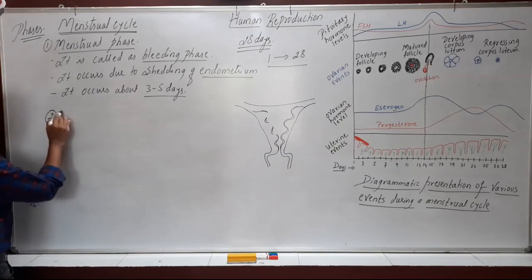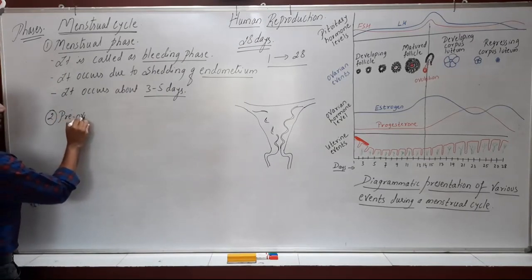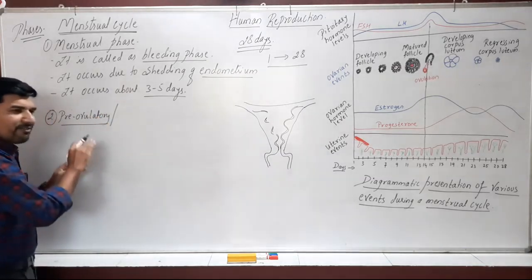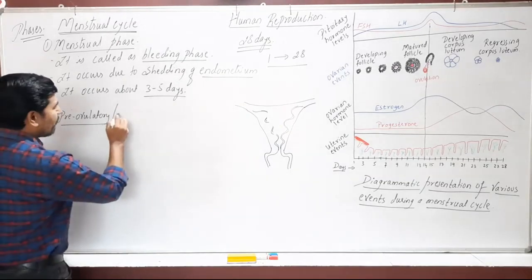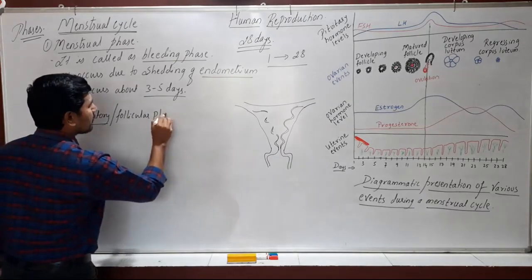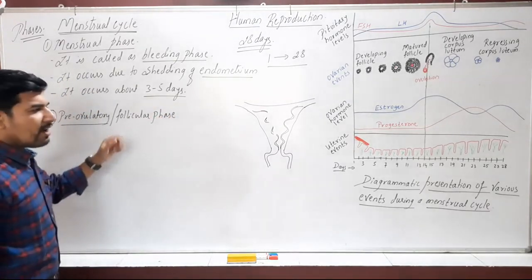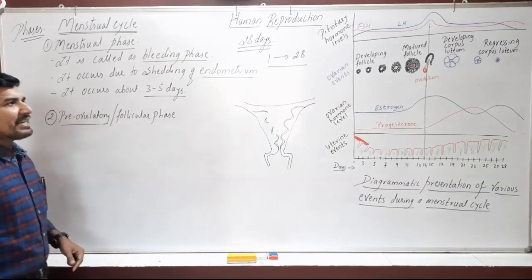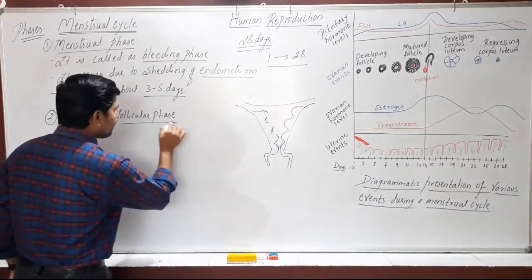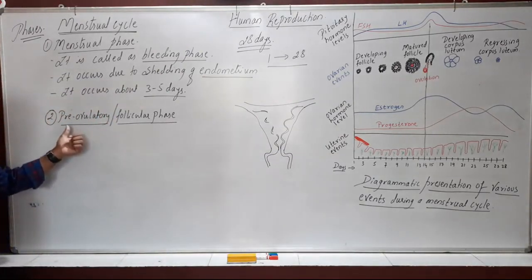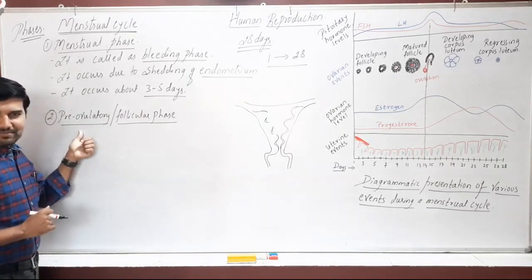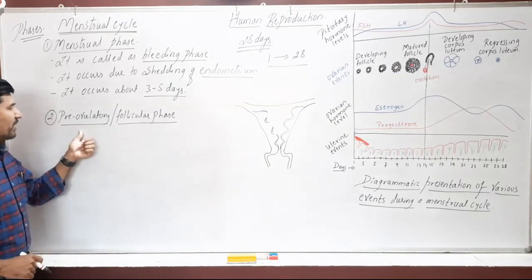The second phase is the pre-ovulatory phase, also called the follicular phase. As the name says, pre-ovulatory means before ovulation. In this phase the follicles inside the ovary get developed.